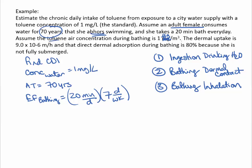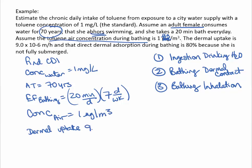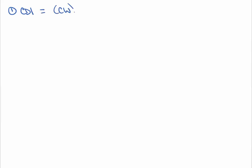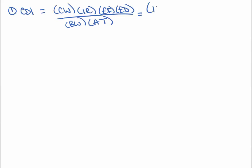We are told the toluene air concentration during bathing is one microgram per meter cubed, the dermal uptake rate is 9.0 times 10 to the negative 6 meters per hour, and 80% of her body is submerged. The approach is to calculate the total CDI as the sum of each exposure pathway: CDI total equals CDI one plus CDI two plus CDI three. For the first exposure pathway, drinking water, CDI equals the concentration in water times the intake rate times the exposure frequency times the exposure duration, divided by body weight times averaging time.